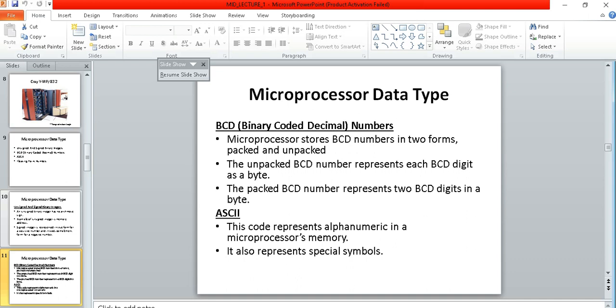Sorry, I have told you a wrong thing. I want to correct that. The unpacked BCD number represents each BCD digit as a byte. Means like the 45, so the 4 you are converting that 4 into binary digits, like what will be the binary of the 4 and what will be the binary of the 5.